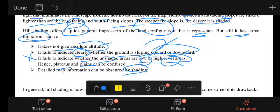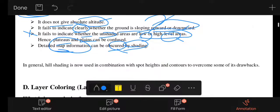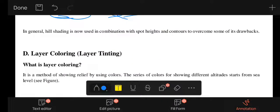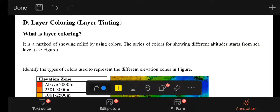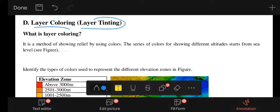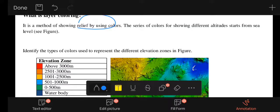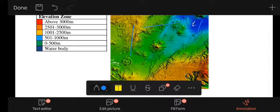Shading is now used in combination with spot heights and contours to overcome some of its drawbacks. Layer coloring is used to show different altitudes by using different colors.